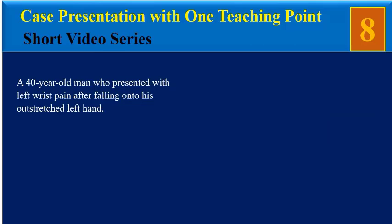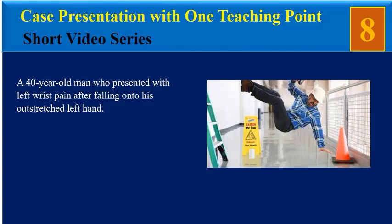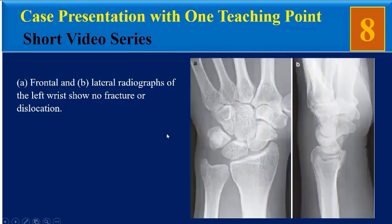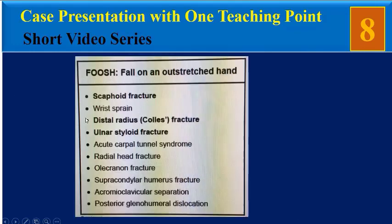A 40-year-old man presented with left wrist pain after falling onto his outstretched left hand. Standard PA and lateral radiographs of the left wrist show no fracture or dislocation.